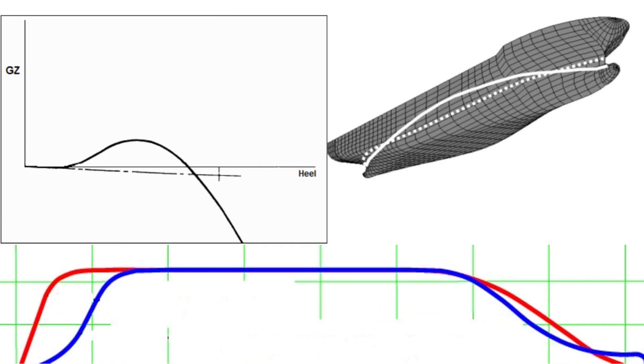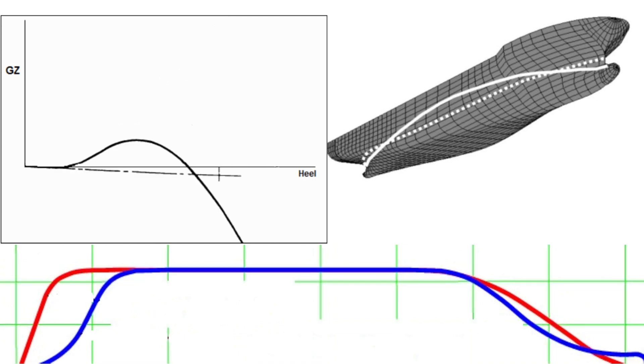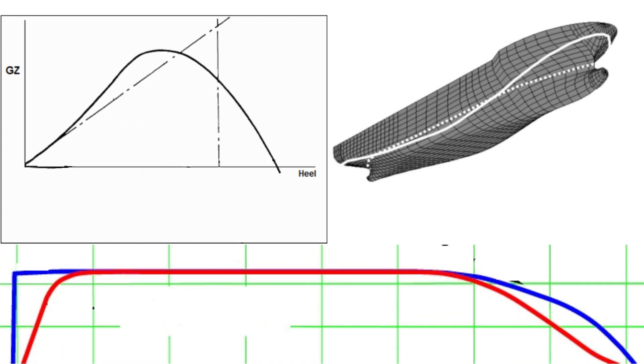This periodic variation in water plane area leads to fluctuations in the ship's righting lever, GZ. These cyclical changes in GZ can induce parametric rolling.